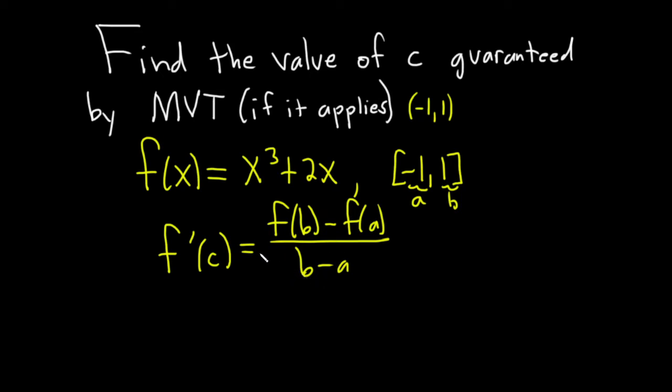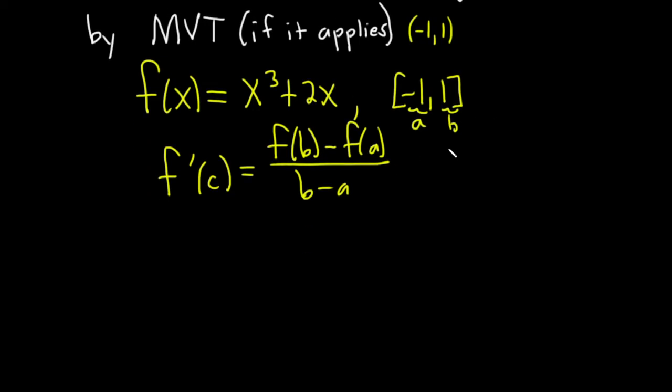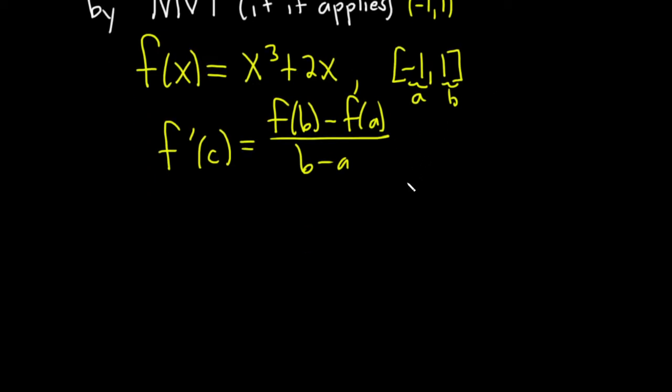All kinds of ways to interpret this. You could say that the instantaneous rate of change at c is equal to the average rate of change over the entire interval. You could say the slope of the tangent line is equal to the slope of the secant line connecting the two points at the endpoints. So let's go ahead and find the value of c. It's all we have to do in this problem.